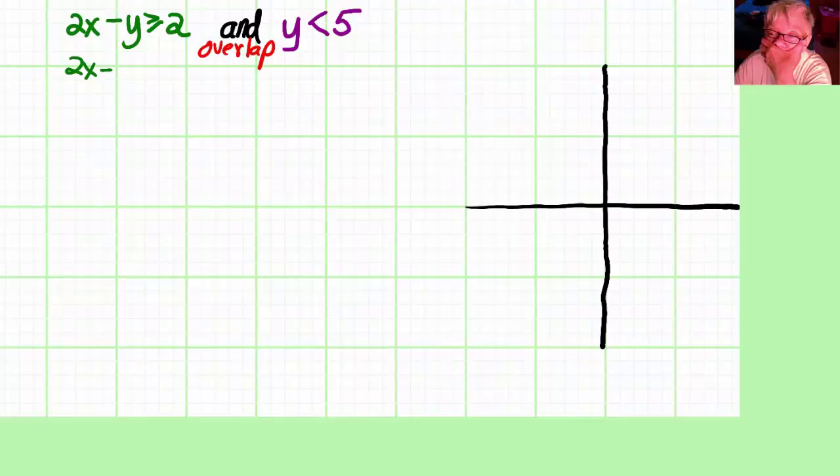We turn our left inequality into the equation of a line and we find two points on the line. I like to use the table method. You can use whatever method you want.